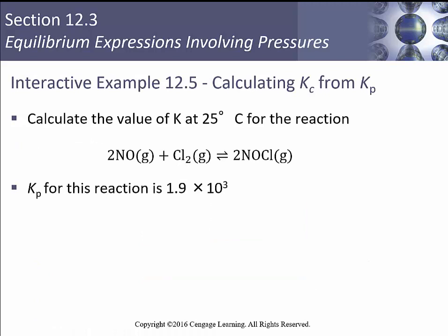So let's do an example of one of those. If we've got a value of K at 25 degrees C for the reaction, we've got 2NO and 2 chlorines giving us 2NOCLs. The KP for that reaction is 1.9 times 10 to the third.